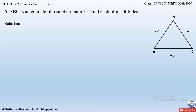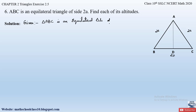We have to find each of its altitudes. In a given triangle we have three altitudes starting from all three vertices. Let us draw altitude AD from vertex A to side BC. Similarly, you can draw the other two altitudes from vertex B and C to sides AC and AB. In an equilateral triangle, the length of all three altitudes will be equal. So let us first find the length of altitude AD, which will equal the other two. Triangle ABC is an equilateral triangle of side 2a, and we draw AD perpendicular to BC.